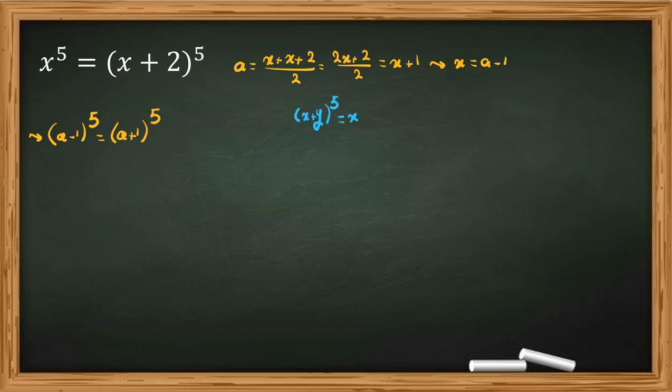x plus y to the power of 5 is x to the 5 plus 5x to the 4 times y plus 5 choose 2, 10x cubed y squared plus 5 choose 3, 10x squared y cubed plus 5xy to the 4 plus y to the 5.